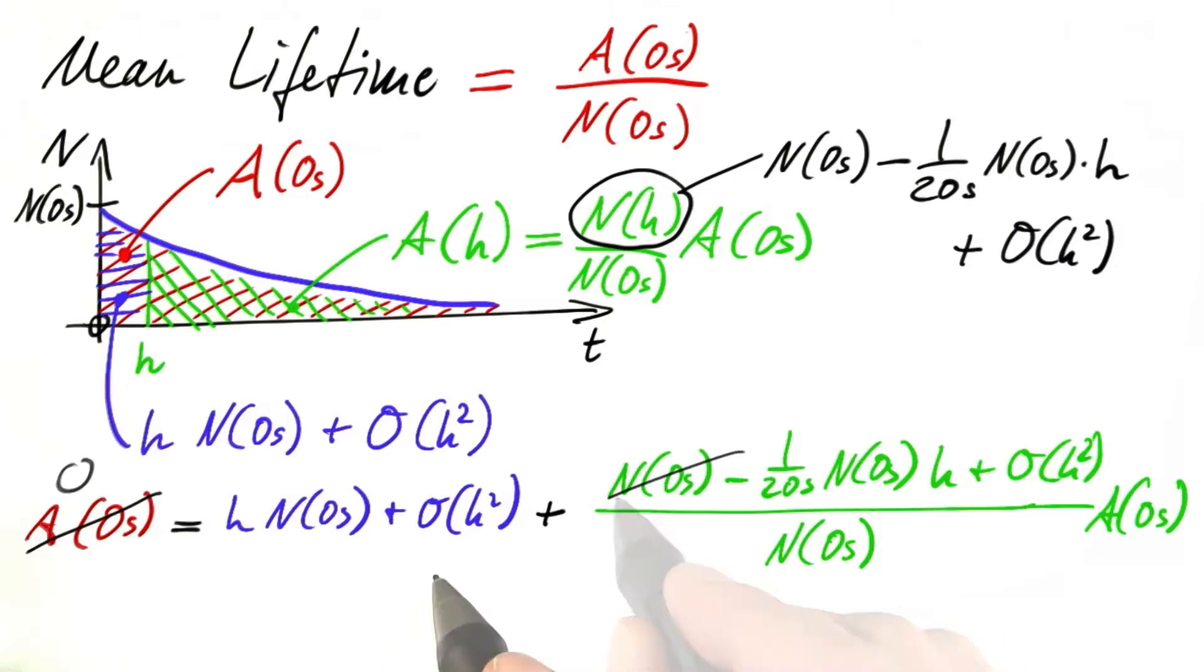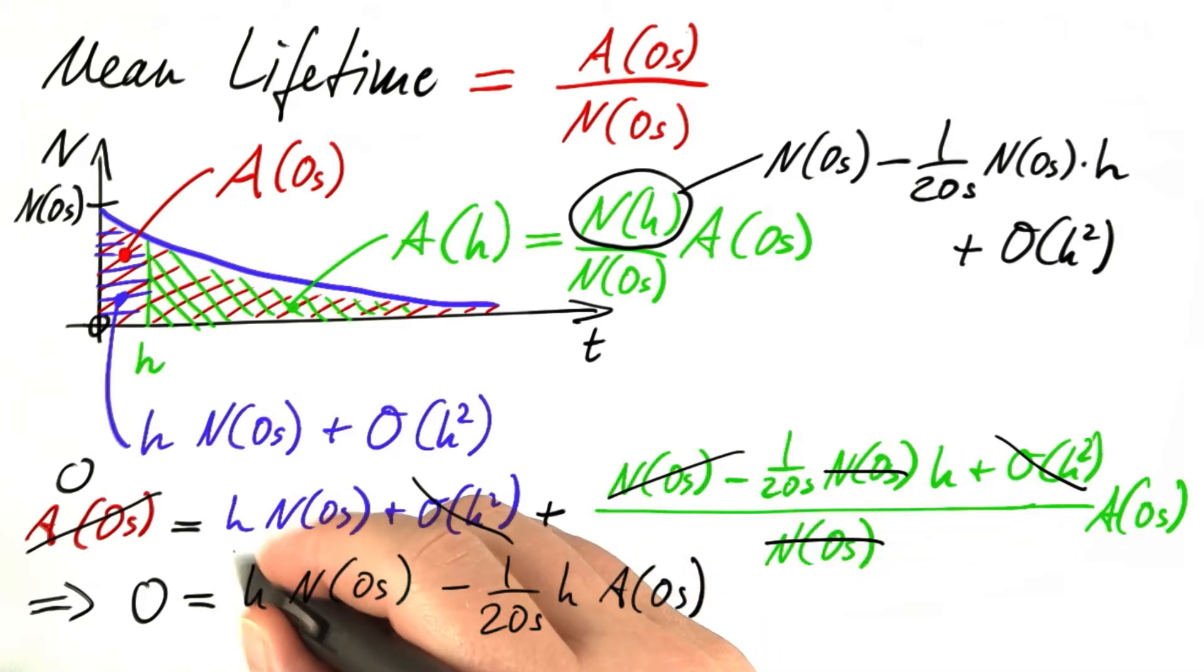We can get rid of these. Then we have terms that are linear in h. Then we have terms that are of first order in h, h times the constant, h times the constant. And we have terms that are of second order in h. The first order terms have to match and the second order terms have to match. So we can get rid of the second order terms. Now we can cancel the initial number here and the initial number there. And you see that 0 equals h times the initial number minus 1 over 20 seconds times h times the complete area. Now we can also get rid of h to find that the area divided by the initial number equals 20 seconds.